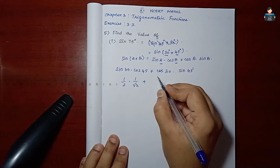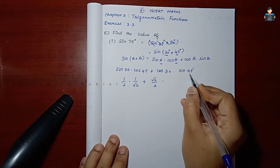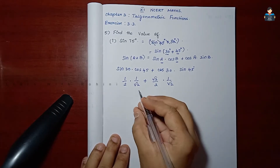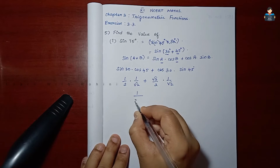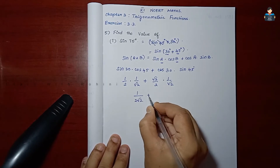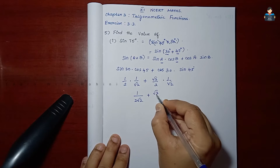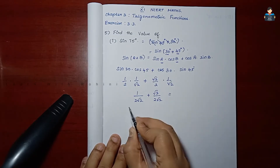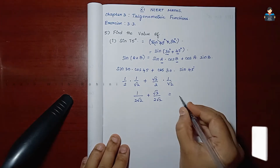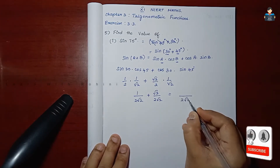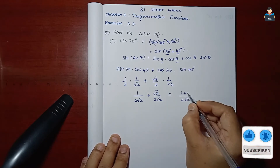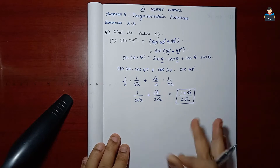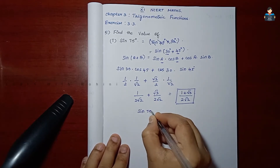Substituting the values: 1 by root 2, so 1 by 2 into 1 by root 2, giving 1 by 2 root 2, plus root 3 by 2 root 2. The denominator is 2 root 2. So we have 1 plus root 3 over 2 root 2.